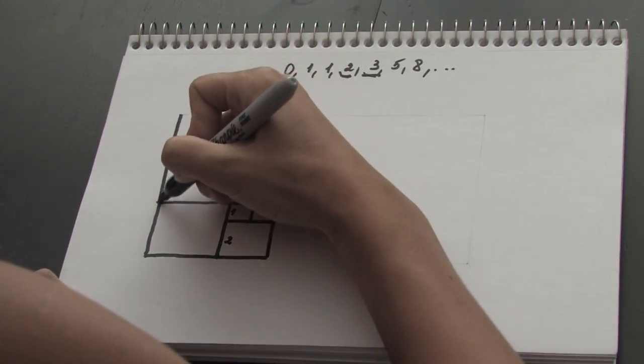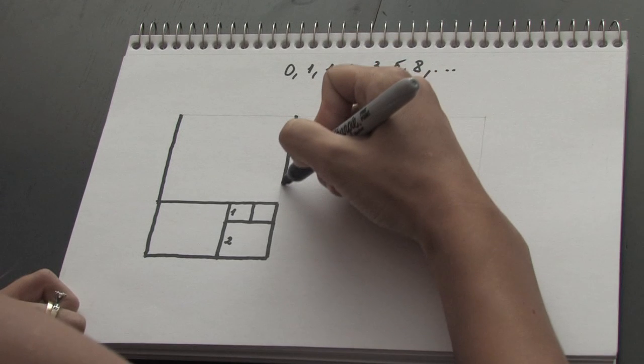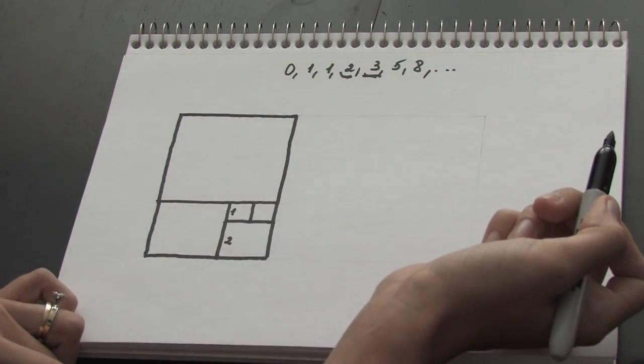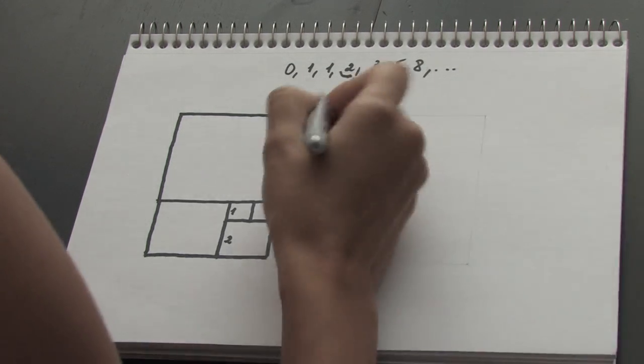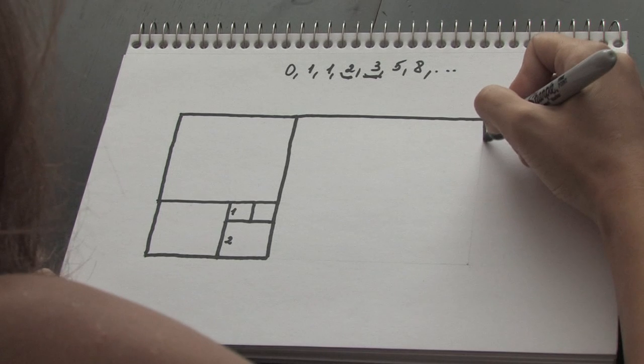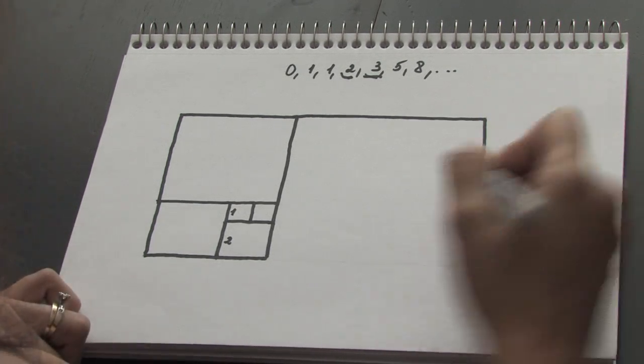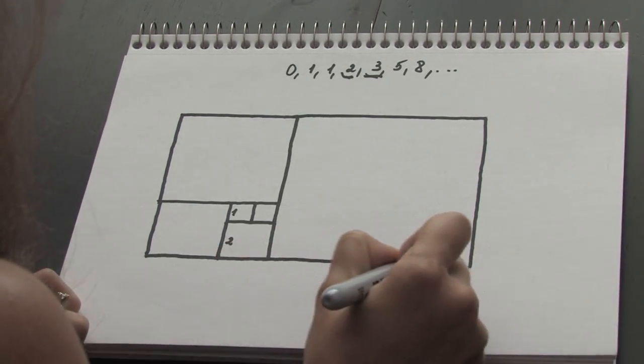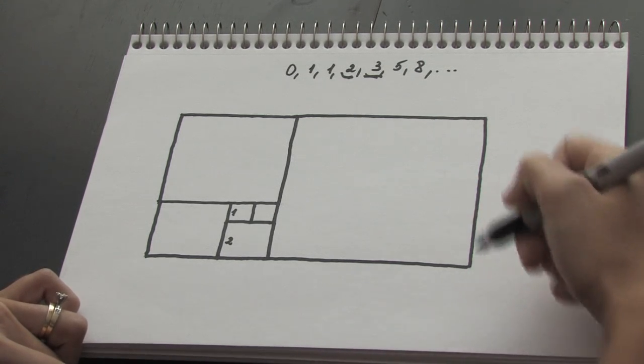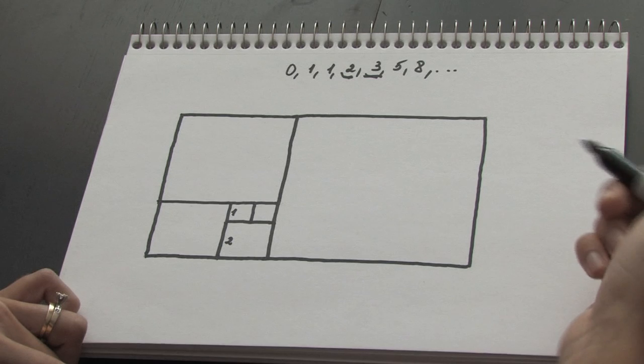So above all the squares I draw the square 5 by 5 units in measure. The next number is 8, here is my next square, and you can continue as long as your paper allows you to do that.